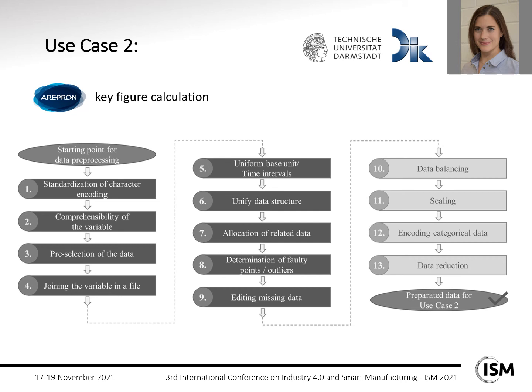Use case two is the key figure calculation, and here we have significantly more steps — nearly all of them. We have the climate change indicator for the machine output selected as the key figure. It is calculated using the consumed power, the duration of the process step, and the CO2 carbon dioxide equivalence. In order to obtain valid calculation results, significantly more method steps are required.